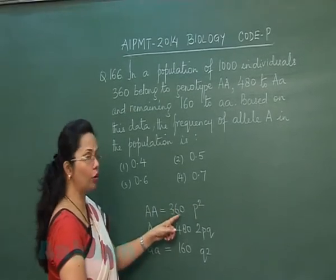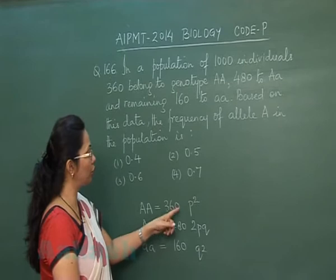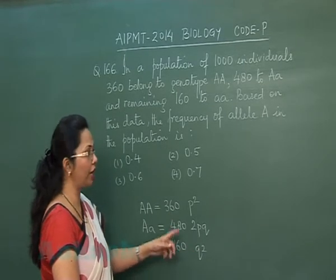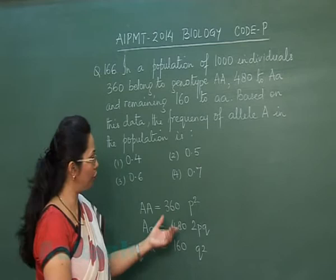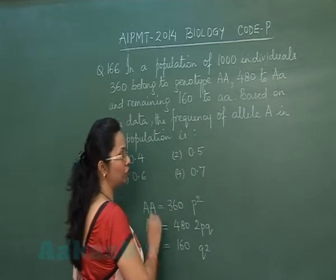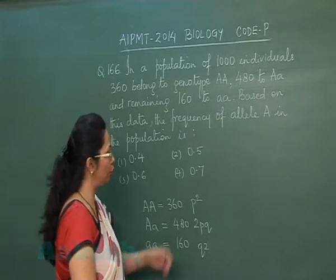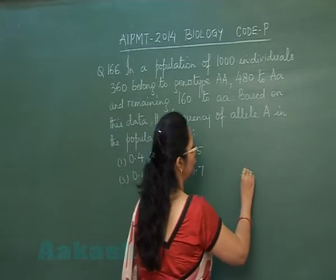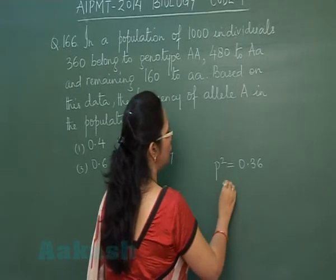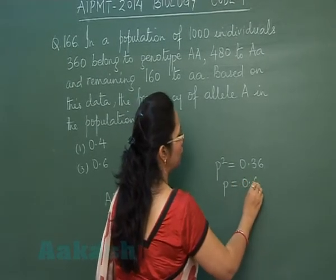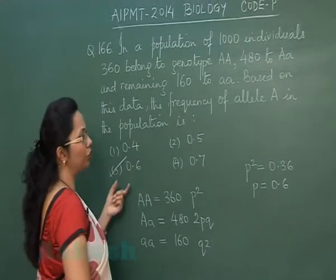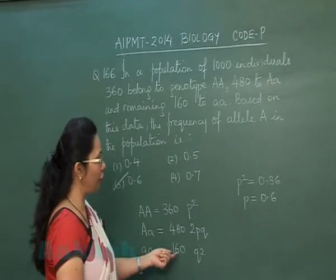There are two methods: we can calculate it by taking the square root from p², or we can use q². Using Method 1: p² = 360/1000 = 0.36, so p = 0.6. That gives us answer option 3, which is 0.6.